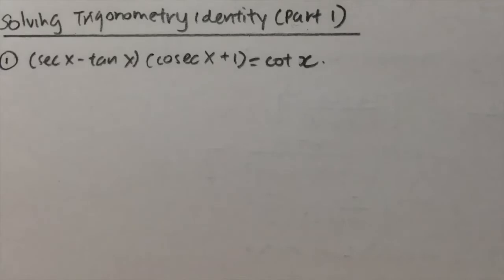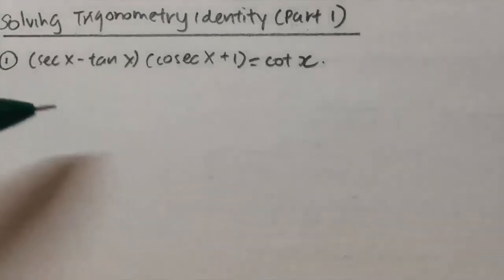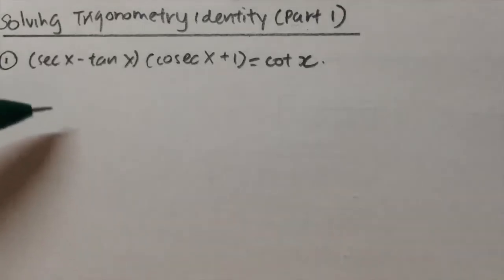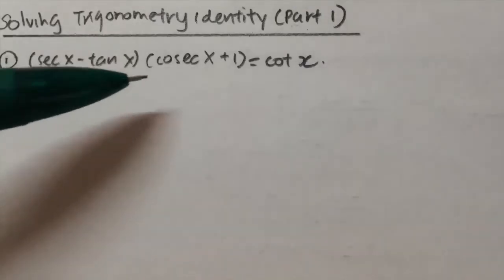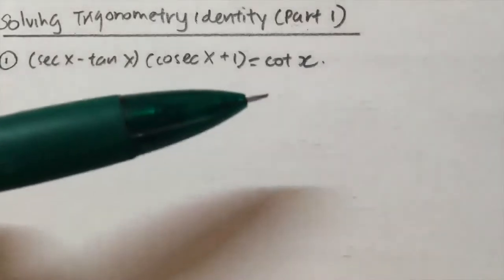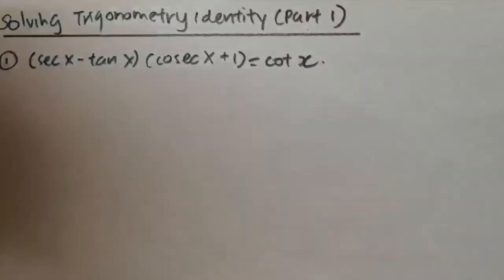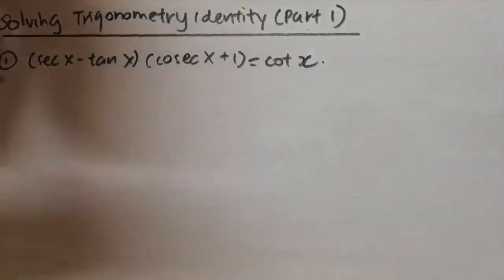The most important thing you need to do is to expand this out. The question is: (sec x minus tan x)(csc x plus 1) equals cot x. I need to prove the identity starting from the left-hand side to the right-hand side.